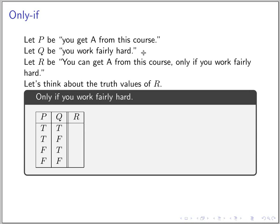Let's call 'you get an A from this course' P, and 'you work fairly hard' Q. The propositional form R consists of two variables P and Q. Let's enumerate our possibilities: true/true, true/false, false/true, false/false. If you get an A only if you work fairly hard, what are the consistent values? In the first case, you get an A and work hard — this is consistent, so R is true.